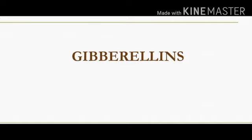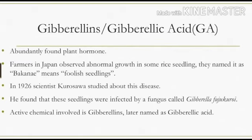Now we can see about the plant hormone gibberellin. Gibberellin is also known as gibberellic acid and is denoted as GA. Gibberellins are the most abundantly found plant hormone.